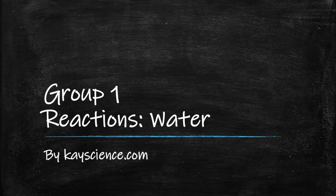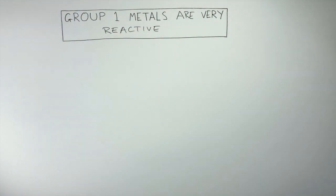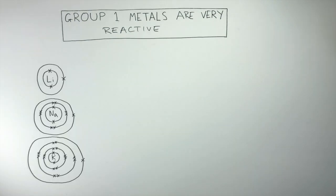Group 1 Reactions by KScience.com. Group 1 metals are very reactive. This means they react very quickly. Their reactivity can be explained by the atomic structure of group 1 metals.